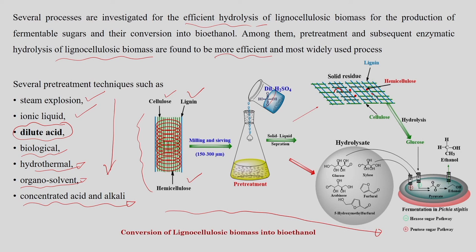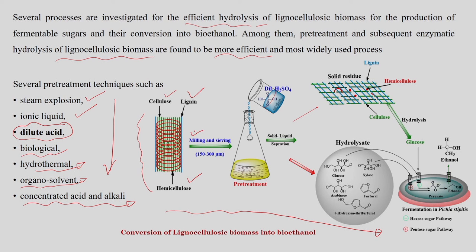The raw material cannot be used directly for conversion and must pass through certain pre-processing stages. The raw feedstock is first milled and sieved to produce smaller particles with a larger surface area for reaction. These smaller particles then undergo a pretreatment step using dilute sulfuric acid to hydrolyze the hemicellulose fraction, making the residual biomass containing cellulose more amenable to enzymatic hydrolysis.